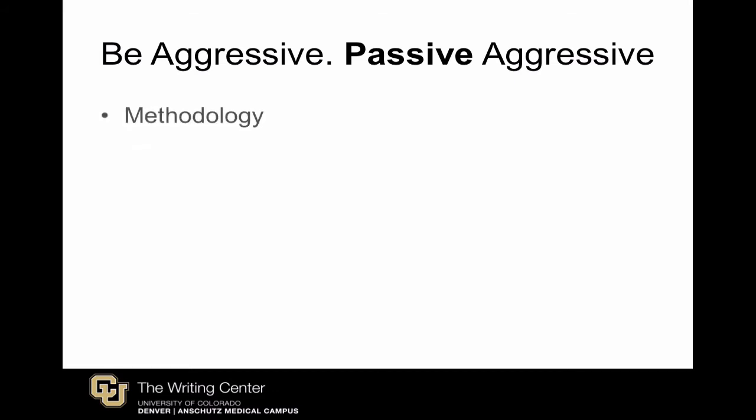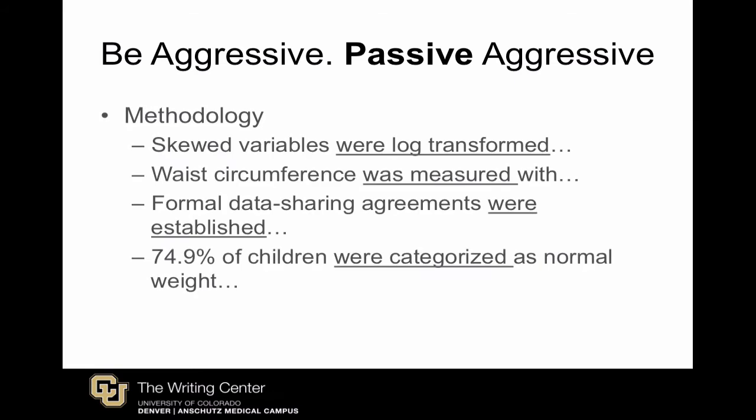Here are some methodological examples of the passive voice: 'Variables were log transformed,' 'circumference was measured,' 'agreements were established,' and 'children were categorized.' If we assume that in each of these contexts the actor was one of the authors or a related researcher, we probably don't need that highlighted in every sentence.